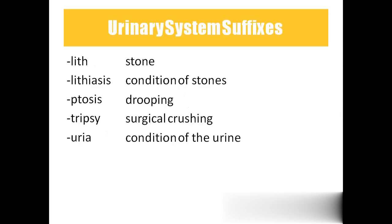Coming to the suffixes: Lith means stones. Lithiasis means abnormal condition of stone formation — stones are very commonly formed in kidneys. Ptosis means drooping or falling from the exact position. Tripsy means surgical crushing. And -uria refers to a condition related to urine. For example, if we have glucose in the urine, we call it glycosuria. If we have ketone bodies in the urine, we call it ketonuria. If we have blood, then it is hematuria. Likewise, the terminology keeps changing.